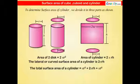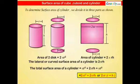The total surface area of the cylinder equals πR² + 2πRH + πR² = 2πR² + 2πRH, or 2πR(R + H).